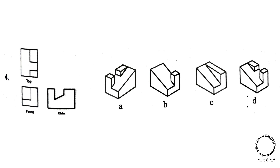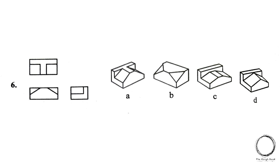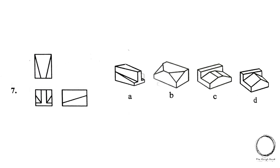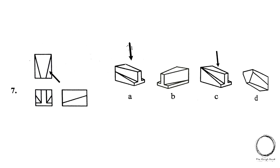Next, starting with the top view: option A and D have the boxes at the top. Further checking the front and the side view, the correct answer is option D, keeping the orientation right. Next question — starting with the top view, it is pretty much clear that option A is already the right answer, but let's cross-check with the front and side view. The right answer is option A.